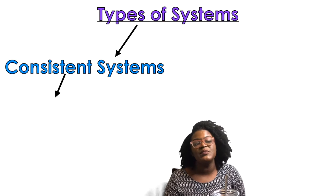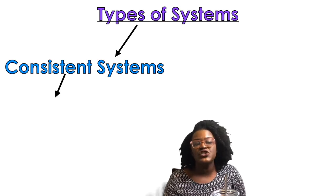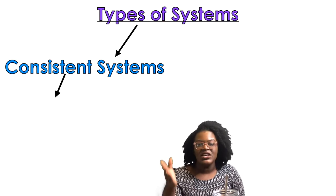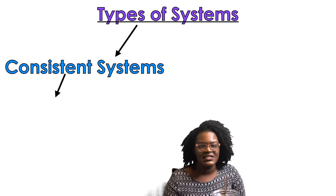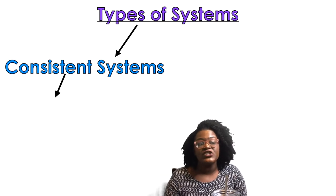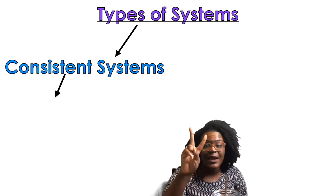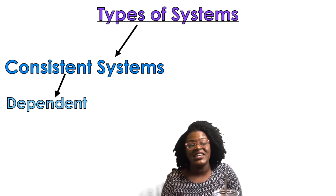Consistent systems are the types of systems that have solutions. So consistent systems have solutions. There are two types of consistent systems.